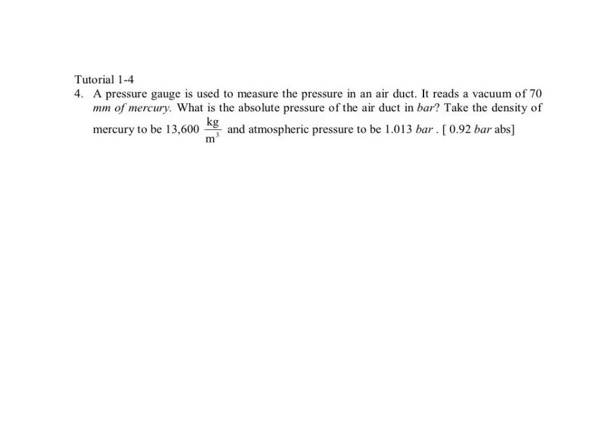Let's look at tutorial 1-4. We are told that a pressure gauge is used to measure the pressure in an air duct. It reads a vacuum of 70 millimeter mercury.